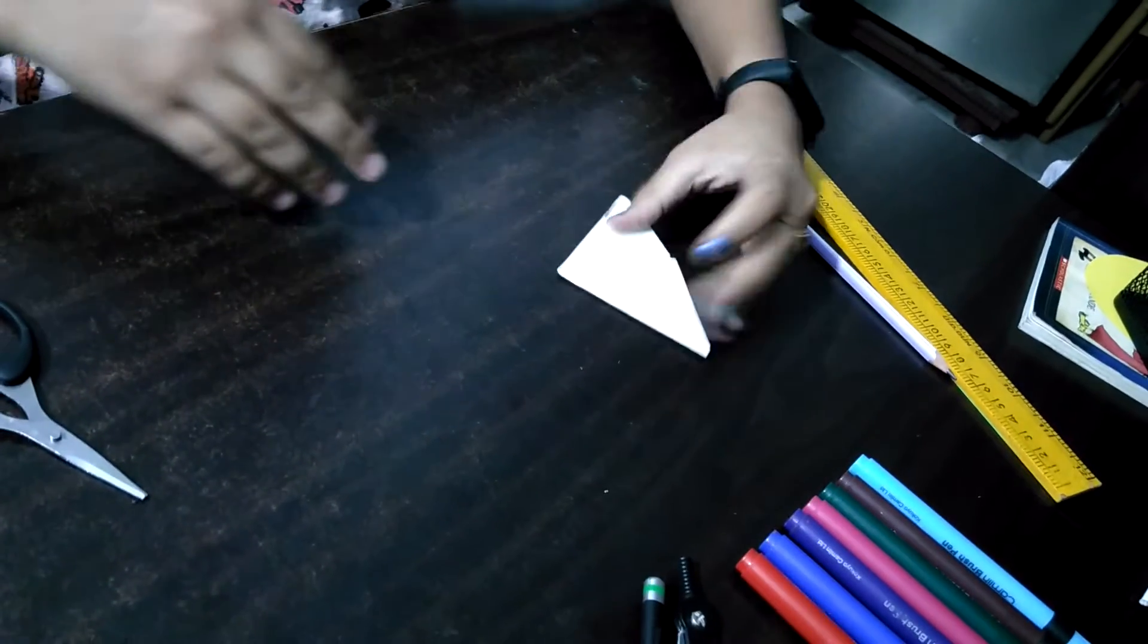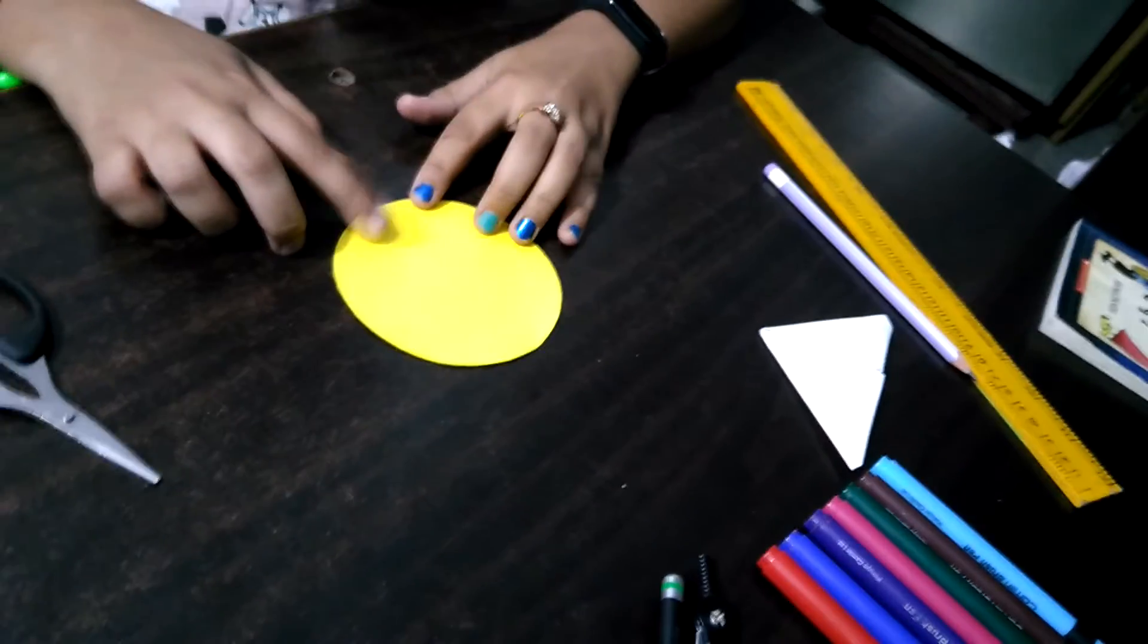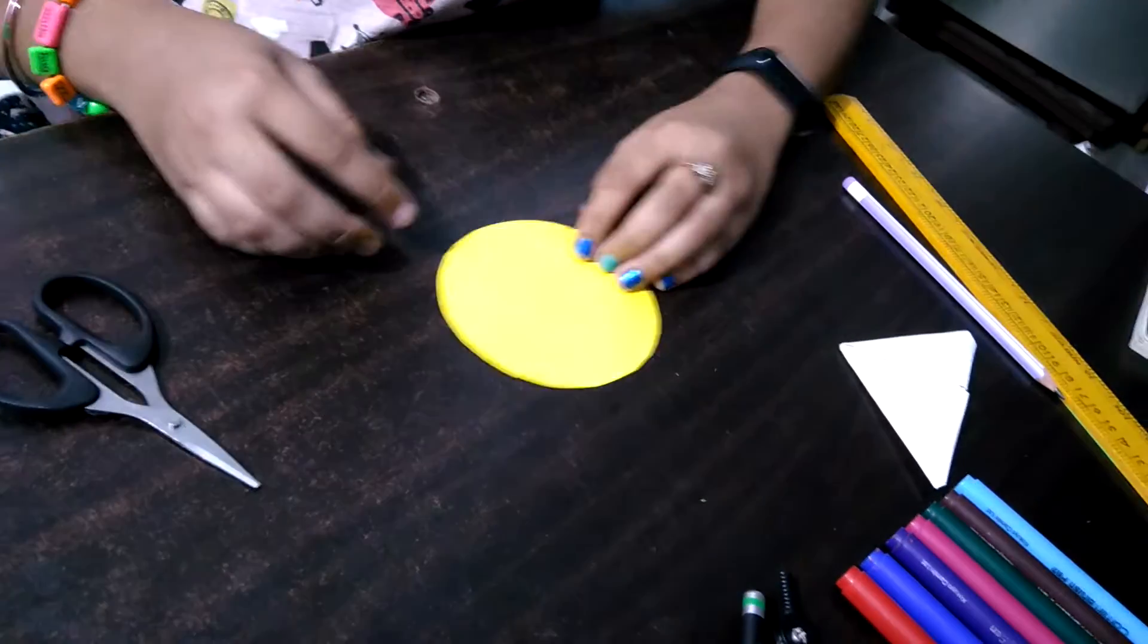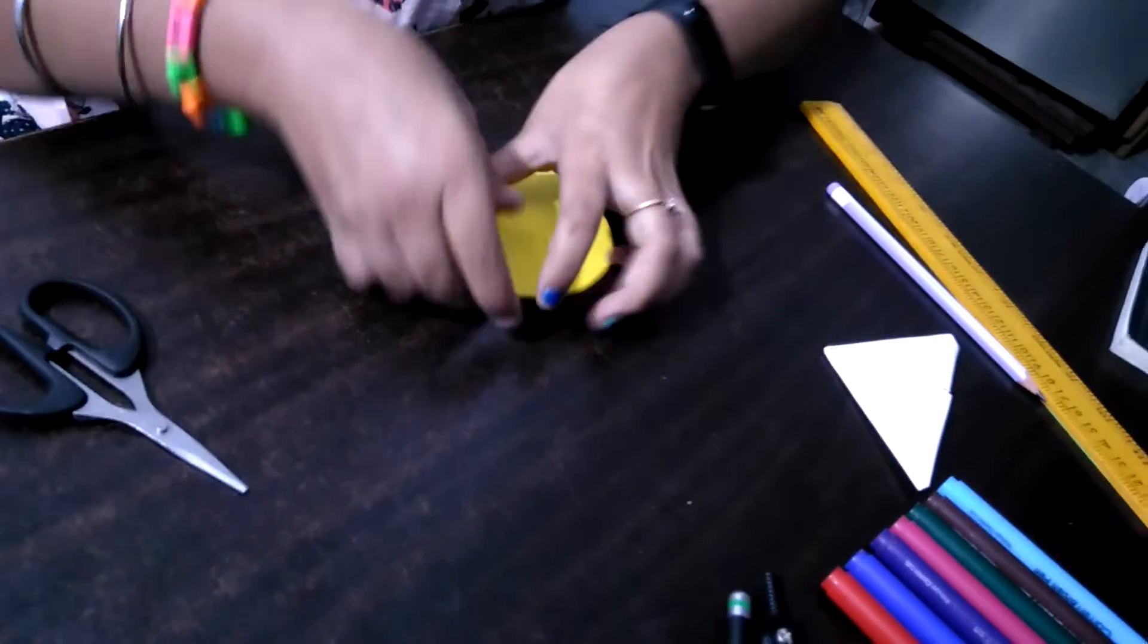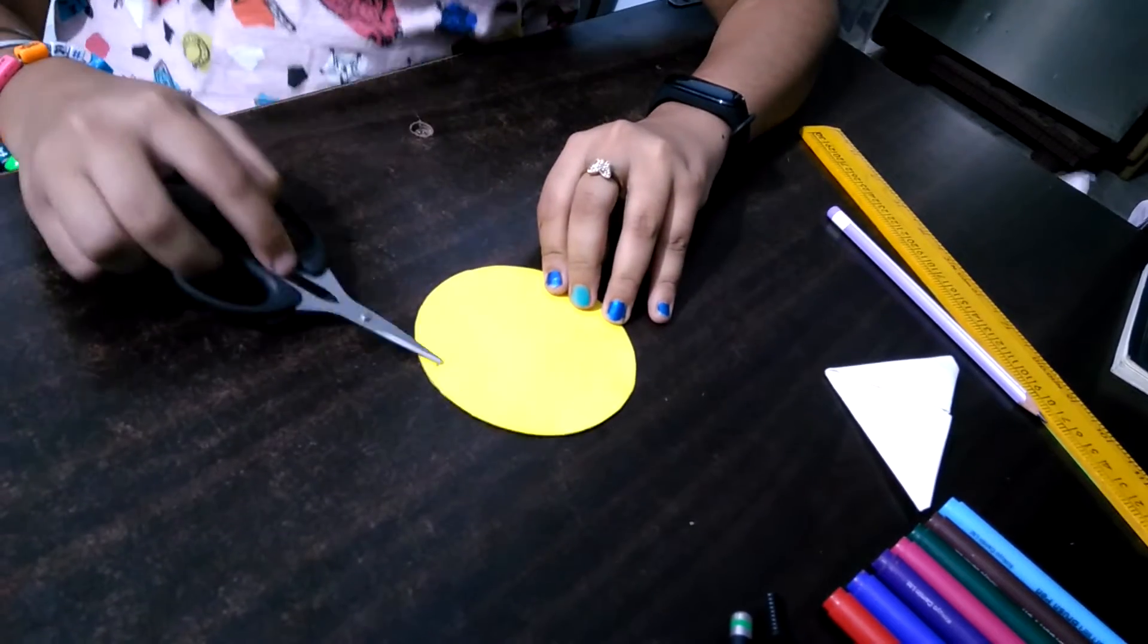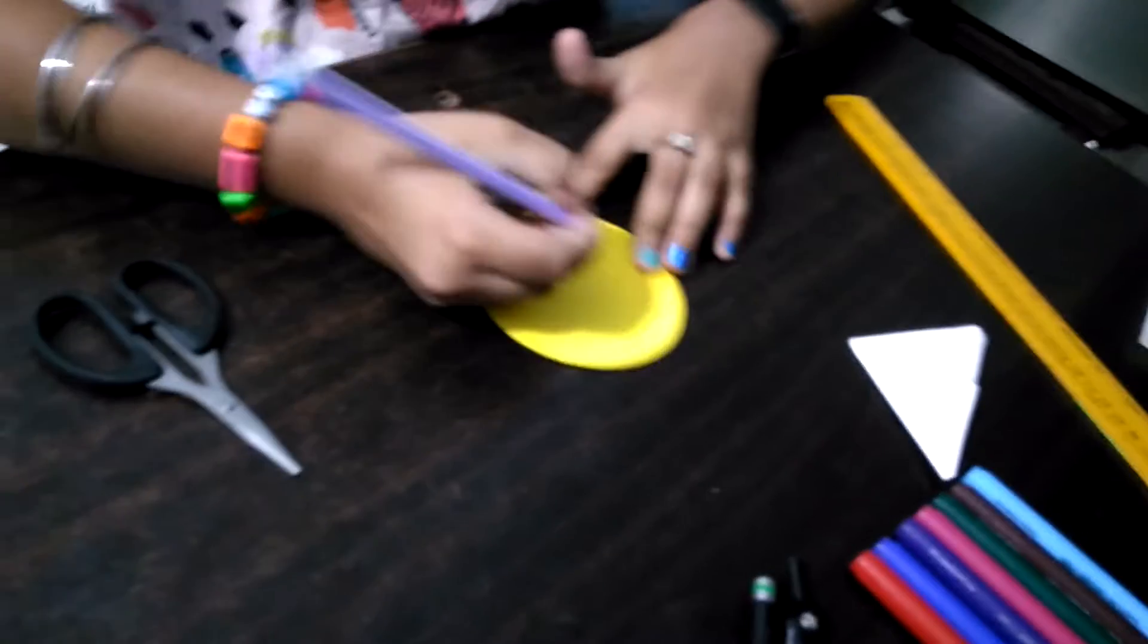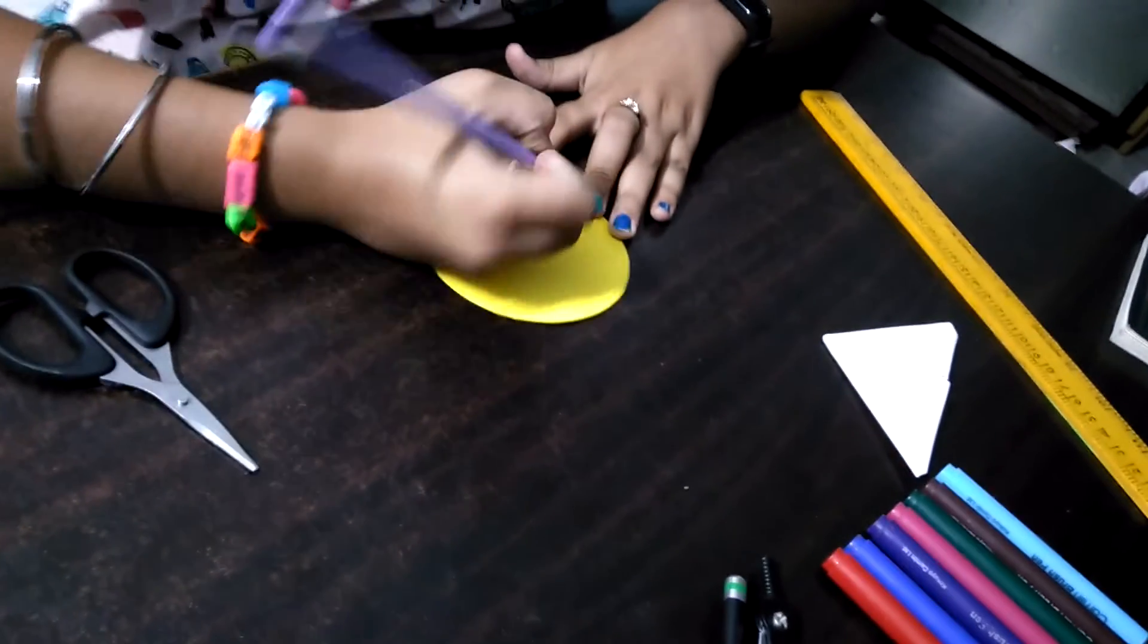This is the base of our bookmark. Now we will take a yellow colored circle. We can take it of any length. Here we have taken it of radius 5 cm. Now draw the emoji over here. You can draw any emoji.